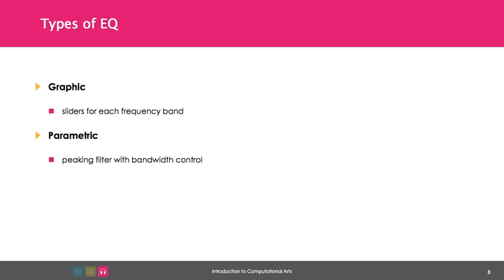The two most common are a graphic EQ, which has sliders for each frequency band, and parametric EQ, which has at least one peaking filter with bandwidth control.